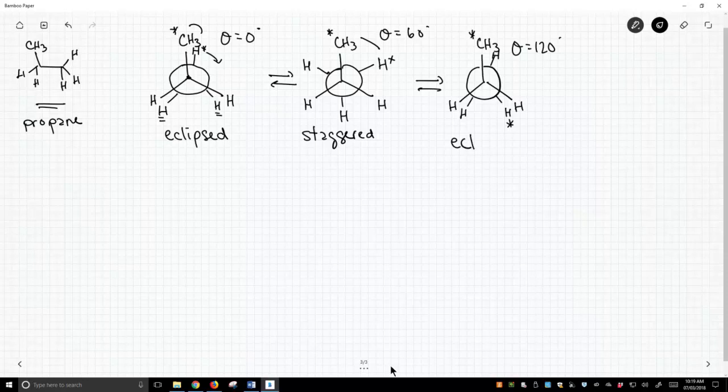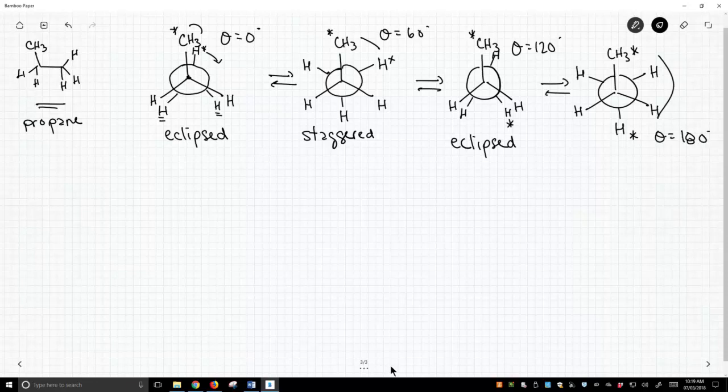We're back to an eclipse conformation, and lastly we'll draw one more Newman projection. Now our starred hydrogen has made it all the way to the bottom of the picture, and our dihedral is about 180. A little messy, and that's a staggered conformation.